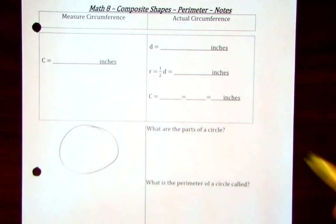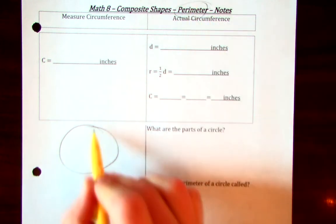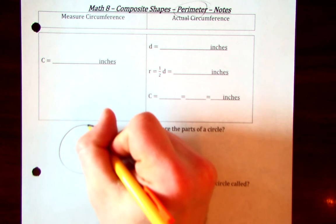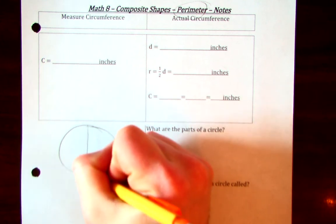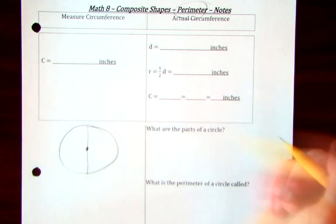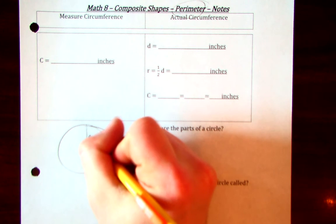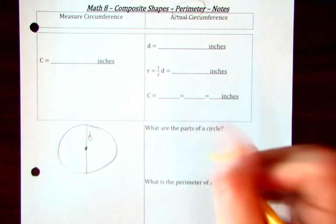Well, what does a circle look like? We're talking about perimeter, so we're talking about the outside line, a perfectly drawn circle. A line through the center from end to end, that's going to be our diameter.